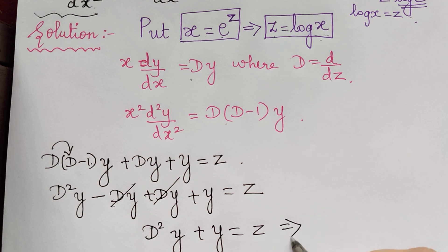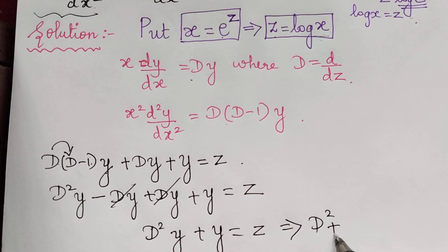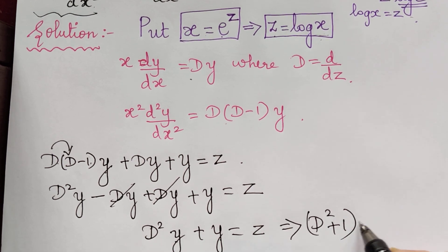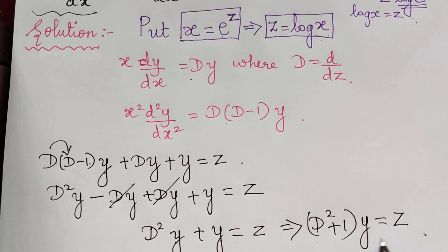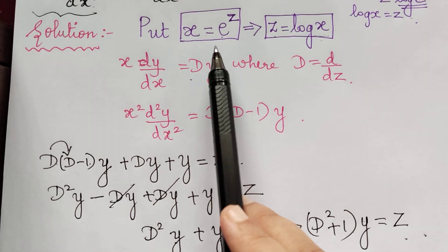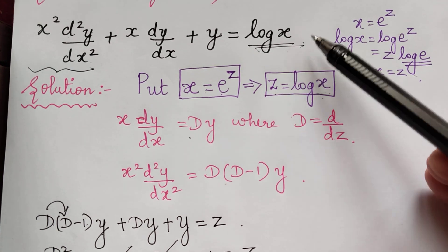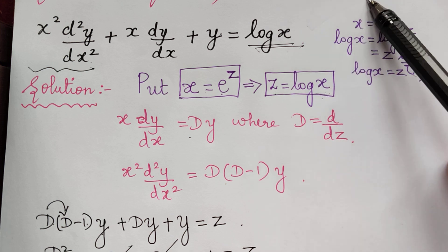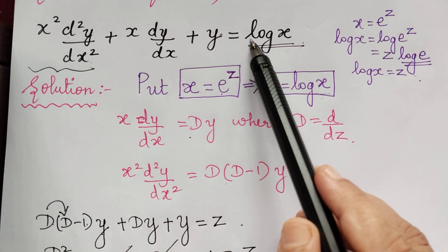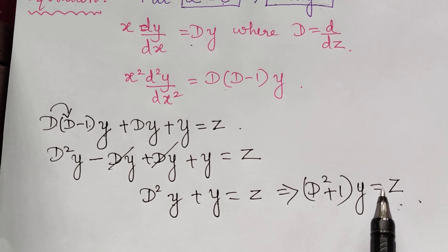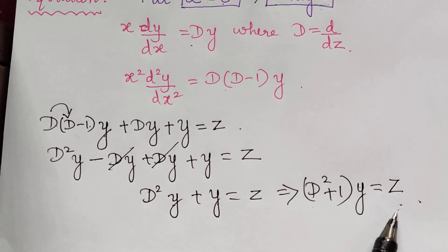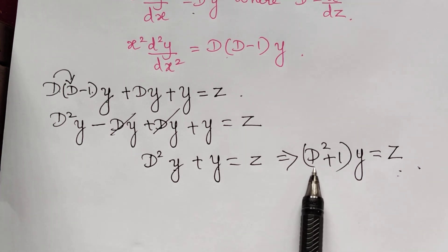So we get (D squared plus 1)y equals z. We have now obtained a differential equation with constant coefficients. By making this substitution we have converted the linear differential equation with variable coefficients into a linear differential equation with constant coefficients, which we already know how to solve.